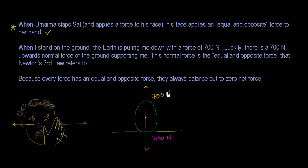And then this part of the statement says this normal force is the equal and opposite force that Newton's third law refers to. There is a normal force supporting me, as I've depicted. But this is not the equal and opposite force that Newton's third law refers to — this is a balancing force. It's a force of the same magnitude going in the opposite direction, but acting on the same body. The equal and opposite force that Newton's third law refers to — each of those forces applies to a different body. You have the force that her hand is applying to my face; the equal and opposite force is not applied to my face — it's applied to her hand. If both forces acted on the same body, they would always net out to zero, and you would never have any net force. So this is absolutely not true — the normal force is not the equal and opposite force.